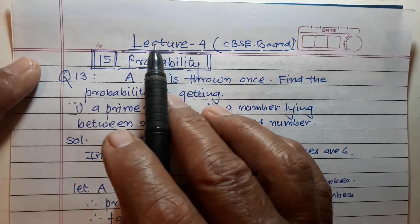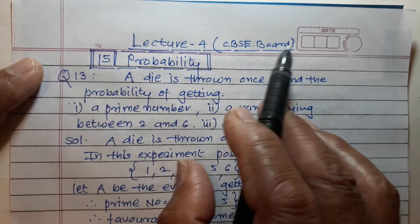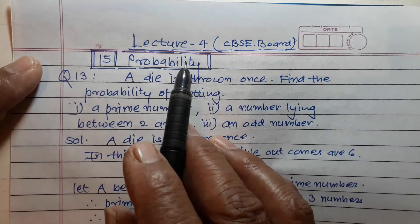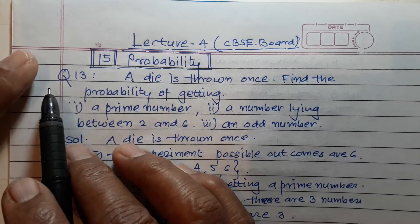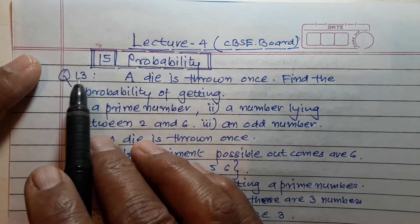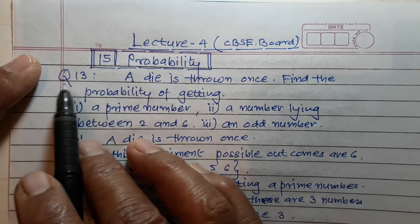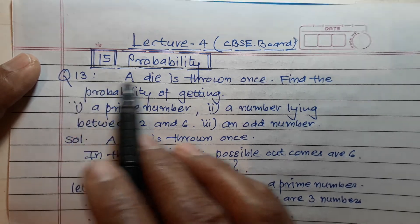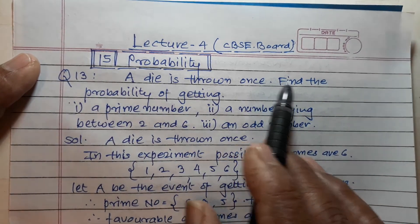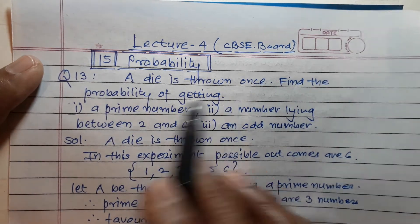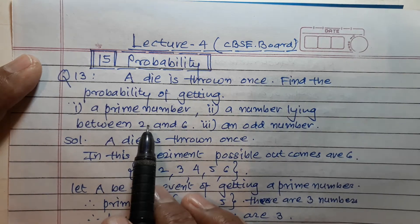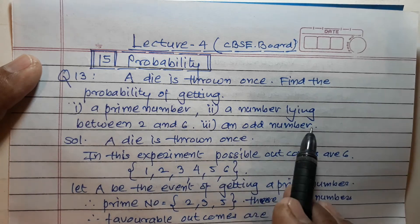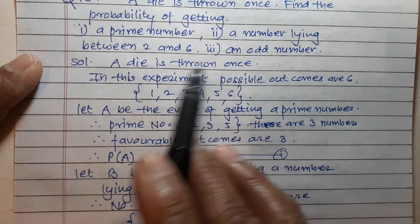Hello my dear students, lecture number four for CBSE board, chapter number 15 Probability. In this lecture I am going to explain some examples from exercise 15.1, question number 13: a die is thrown once. Find the probability of getting: number one, a prime number; number two, a number lying between two and six; number three, an odd number.